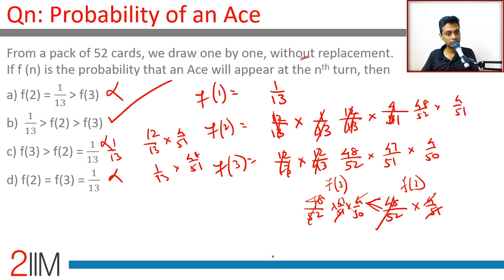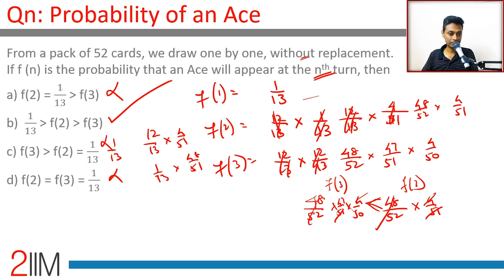Note: the previous steps had errors. The correct interpretation is that we draw one by one without replacement, and f(n) means the ace will appear for the first time at the nth turn. That's important to keep in mind — the first ace appears at the nth turn.